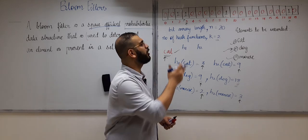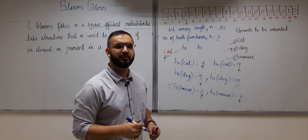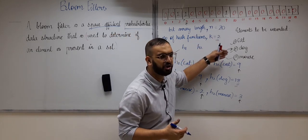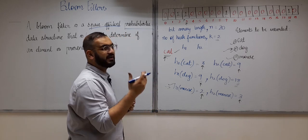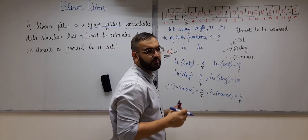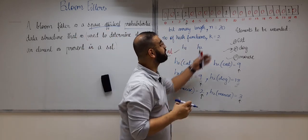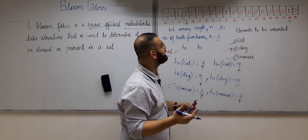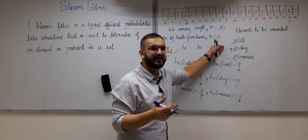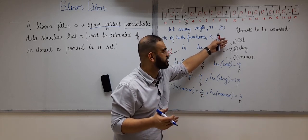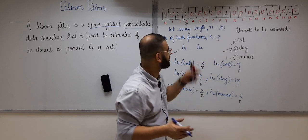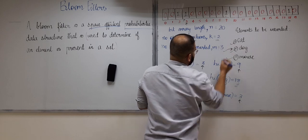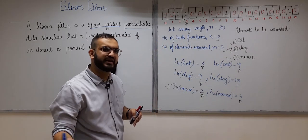This is how the insert operation is performed in bloom filters. We have inserted all three elements: cat, dog, and mouse. The number of elements inserted in the bloom filter is denoted by m, and here m equals 3.